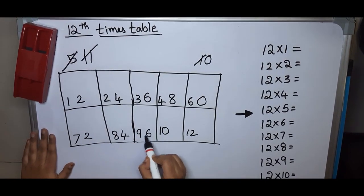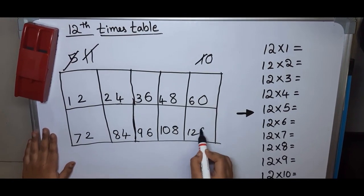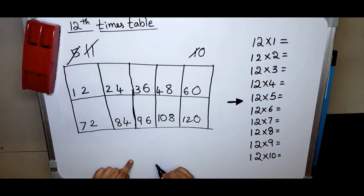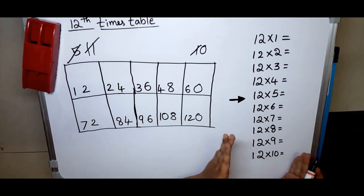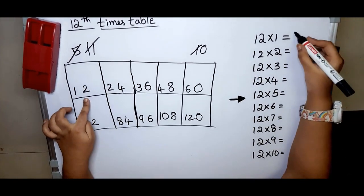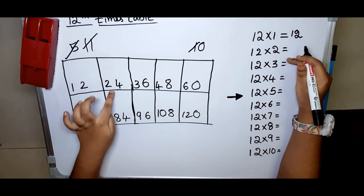Okay, hope you understand this trick. Okay, now let's transfer here. Twelve ones are twelve, twelve twos are twenty-four, twelve threes are thirty-six, twelve fours are forty-eight, twelve fives are sixty, twelve sixes are...